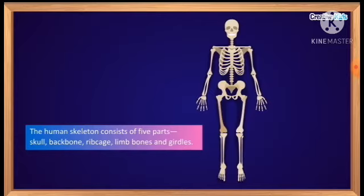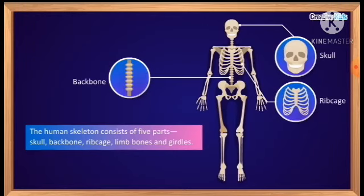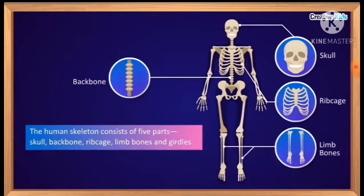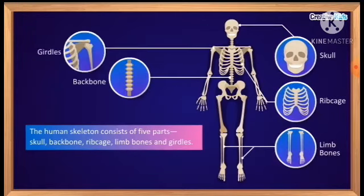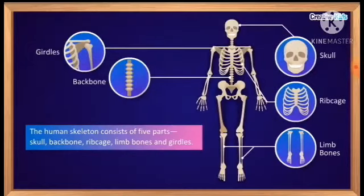The human skeleton consists of five main parts: skull, backbone, rib cage, limb bones (including hindlimb and forelimb), and girdles. We will discuss each of these five parts in detail.